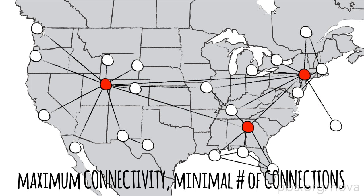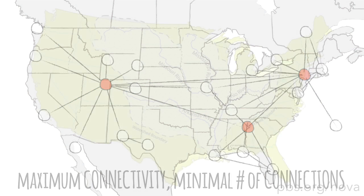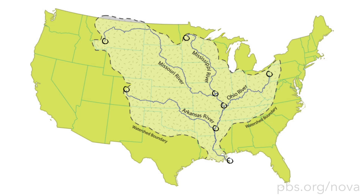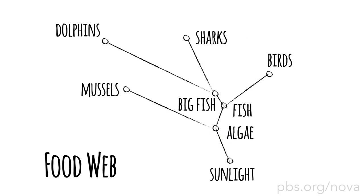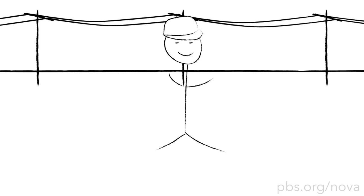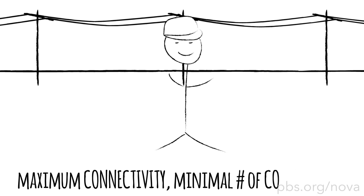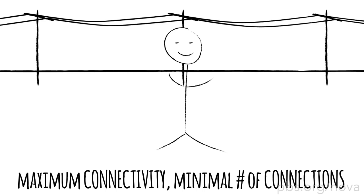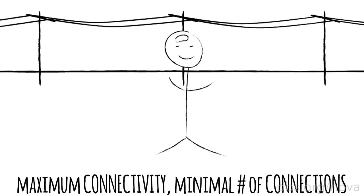Fewer connections mean resources can travel through the network more efficiently. Scientists now know that this pattern appears spontaneously all the time in nature, found in places like rivers, the food webs of ecosystems, and even inside our own bodies — for the same reason we organize our power grid this way: it gives you the most connectivity for your wiring cost.